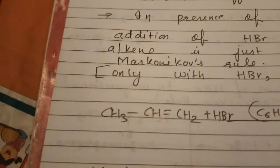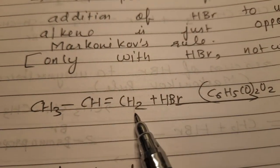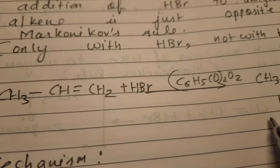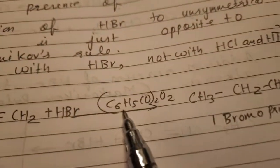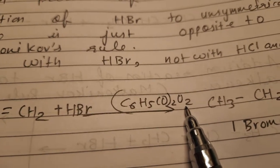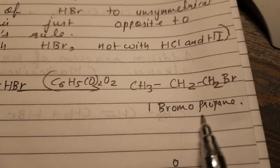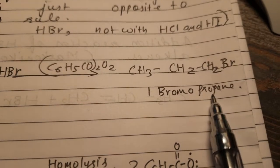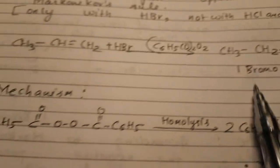Consider propene plus HBr again — this applies only with HBr. In the presence of benzoyl peroxide (C6H5-CO-O-O-CO-C6H5), the reaction gives 1-bromopropane as the major product. Compare this to Markovnikov's rule, which gave 2-bromopropane — here, anti-Markovnikov gives 1-bromopropane instead.